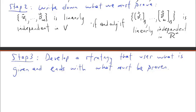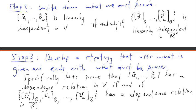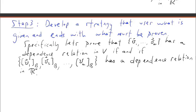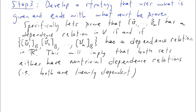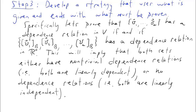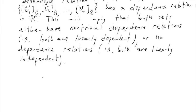Step three: we need to develop a strategy that uses what is given and ends with what must be proven. Specifically, we're going to prove that the set v1 down to vm has a dependence relation in v if and only if the corresponding coordinate vectors have a dependence relation in Rn. From this, we'll conclude that either both sets have non-trivial dependence relations — that is, they're linearly dependent — or they have no dependence relations, meaning they're both linearly independent.